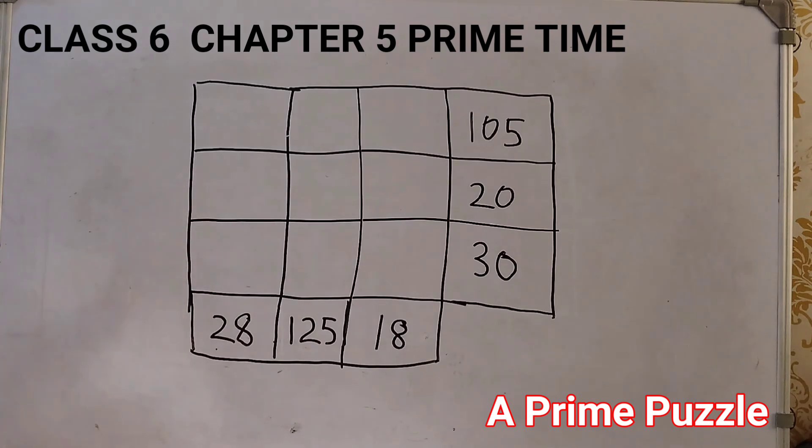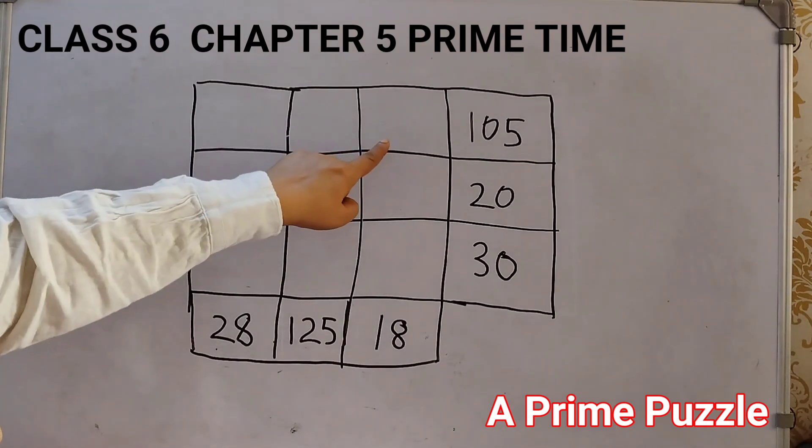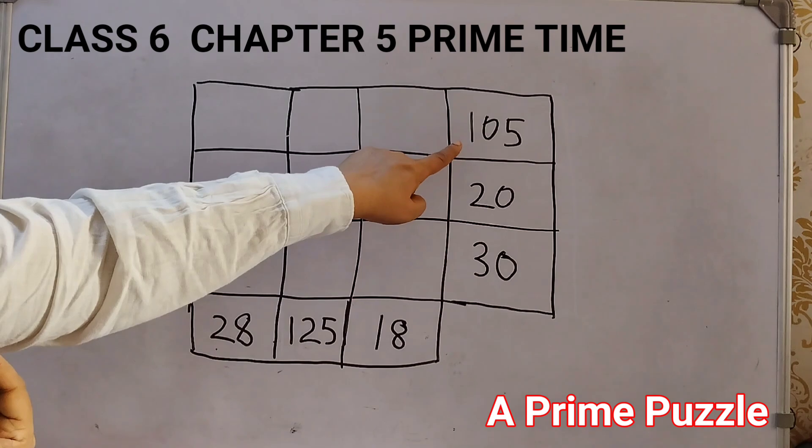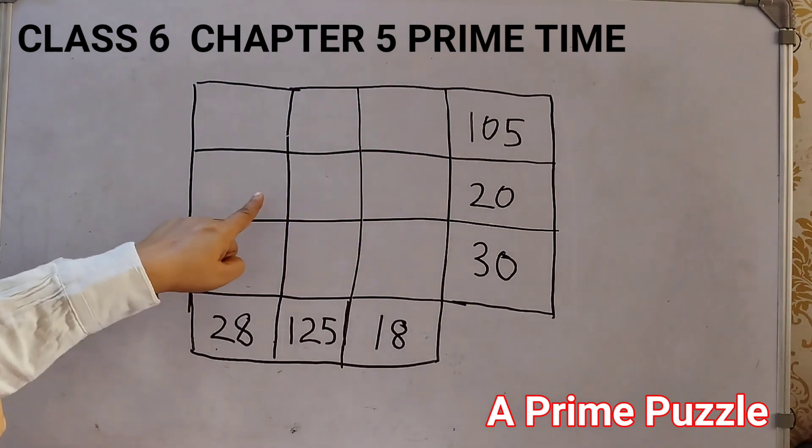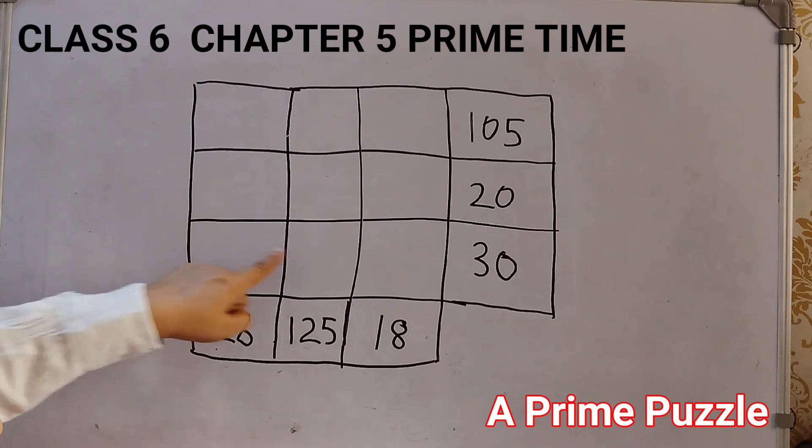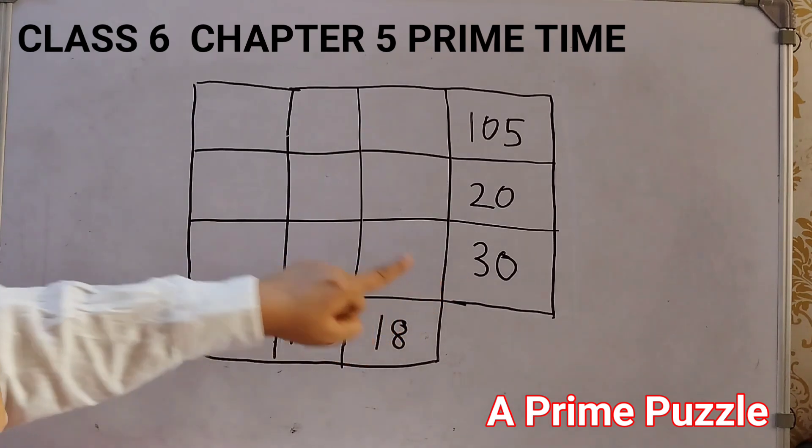All these boxes should be filled with prime numbers. The second thing is that the product of each row, that means whatever we fill up here, here and here, when we multiply all 3, we should get 105. Same way here, 3 places when we multiply, we should get 20. 3 places multiplied, we get 30.